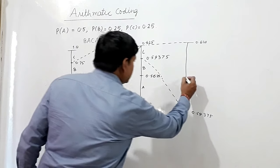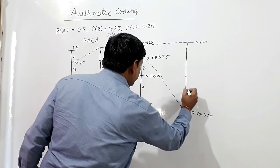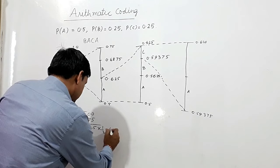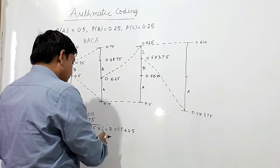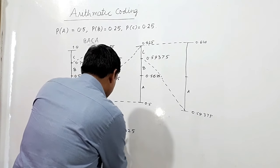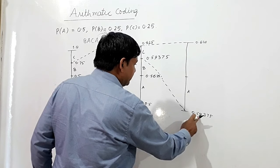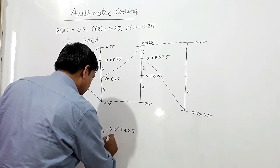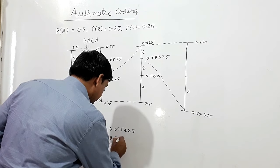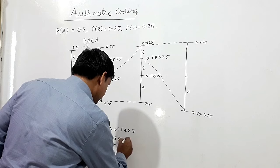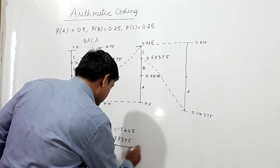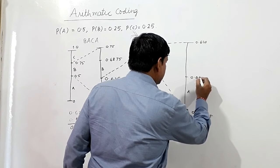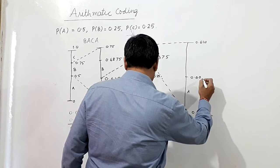To find the upper limit of A within C's interval, I multiply 0.03125 by one half (probability of A), giving 0.015625. A's sub-interval lower limit is 0.59375, and the upper limit is 0.59375 plus 0.015625, which equals 0.609375.